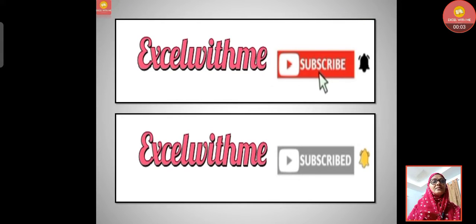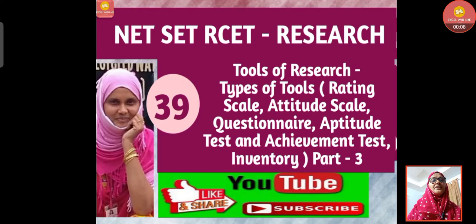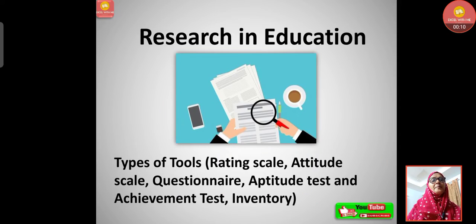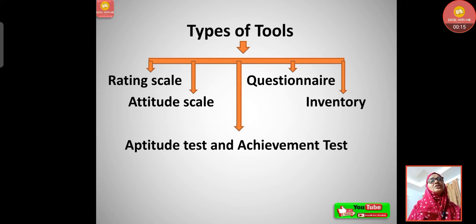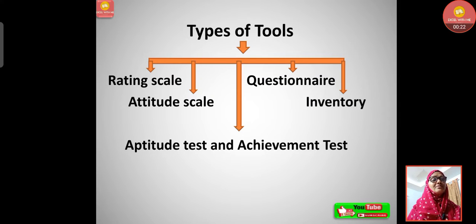Hello learners, this is Habiba with Excel With Me. If you like the video, please do like, share, subscribe, and comment below. Let's start today's class on research in education. The topic is types of tools, under which we have rating scale, attitude scale, aptitude test, achievement test, questionnaire, inventory — all these types of tools. In the previous class we discussed rating scale thoroughly; today we are going to cover attitude scale.